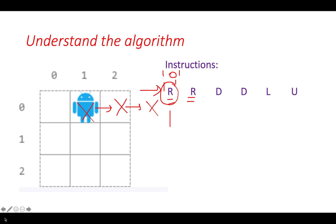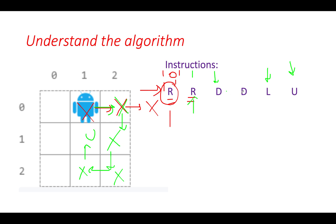For the second iteration starting from index 1, the instruction is R so the robot moves right. Next is D, robot moves down. Then D again, robot moves down. Then L, robot moves left. Then U, robot moves up. All instructions are exhausted — the robot successfully executed 5 instructions. The answer for index 1 is 5.